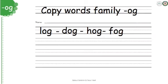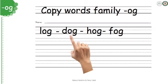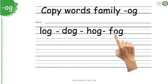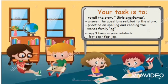And now, my dear kids, let's take our English notebook and copy the words — Family OG: Log, Dog, Hog, and Fog. Don't forget to write between the lines. Your task for today is to retell the story, then answer the questions related to the story, and practice spelling and reading the words — Family OG. Finally, copy three times in your copybook the words: Log, Dog, Fog, and Jog.